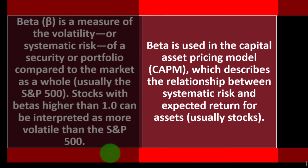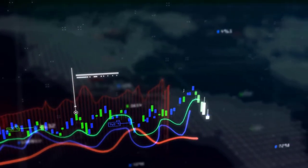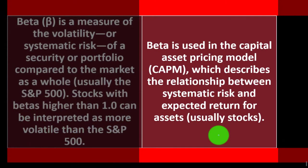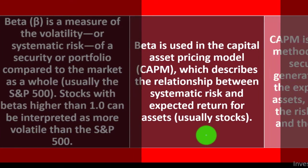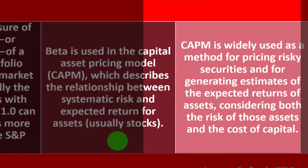Beta is used in the Capital Asset Pricing Model — the CAPM — which describes the relationship between systematic risk and expected return for assets, usually stocks. CAPM is widely used as a method for pricing risky securities and for generating estimates of expected returns, considering both the risk of those assets and the cost of capital.